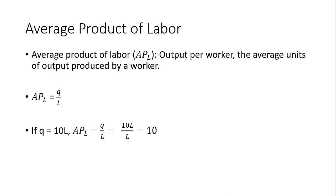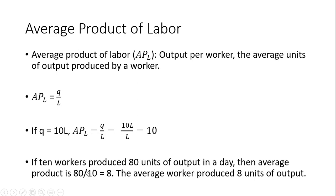This is a very special type of production function; not all production functions will have such a simple average product of labor relationship. For another example: if 10 workers produced 80 units of output in a day, then average product is 80 divided by 10 workers, which equals 8. So on average, each worker produced 8 units of output.